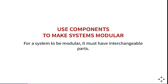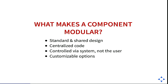Why are components an improvement? Because components can make systems modular, and for a system to be modular it must have interchangeable parts. What makes a component modular? First, you need a standard and shared design across the project — you have to design thinking in components from the beginning. It also needs centralized code: if you have centralized code, you only write it once and don't repeat the same code again and again.